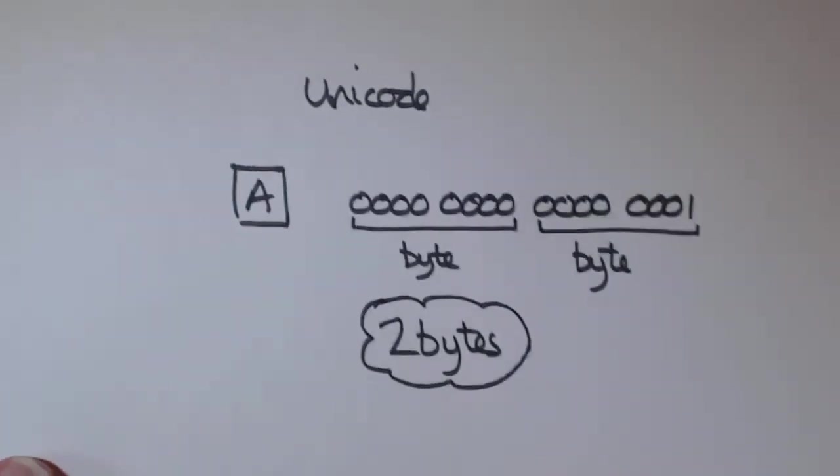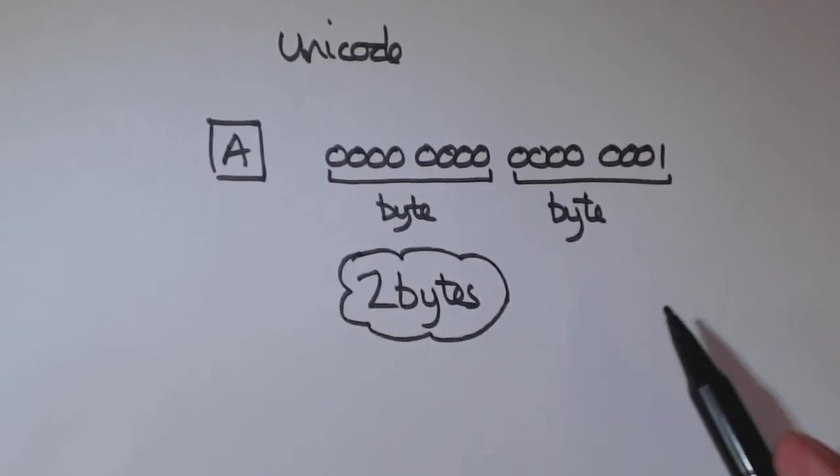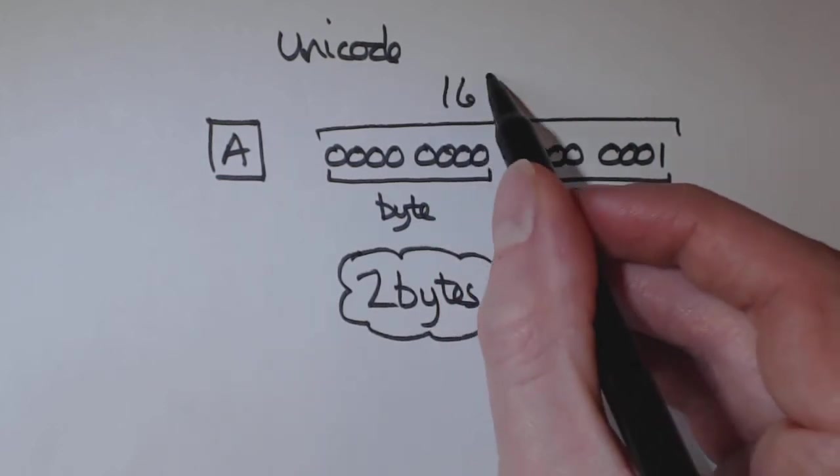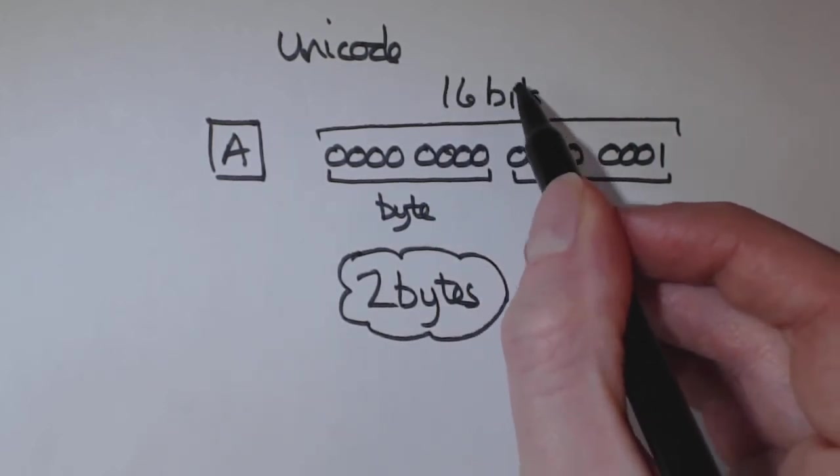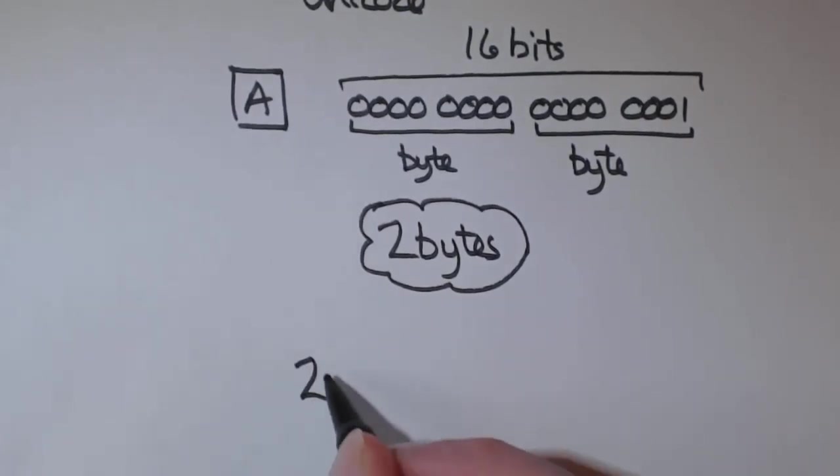Now, the reason you'd want to use Unicode is if you need to represent a lot more characters. Because if we look at, altogether it's 16 bits. To find out how many characters you can represent, you have 2 to the power of n.